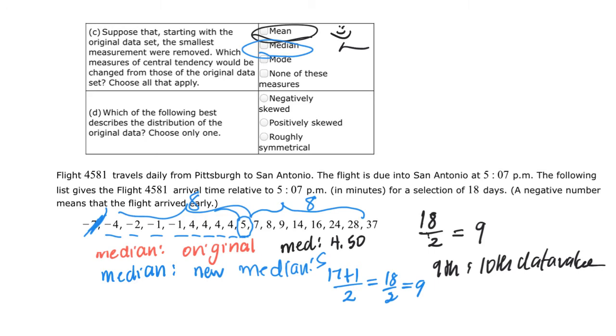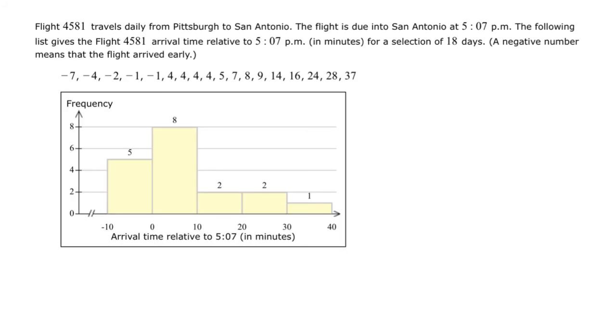D says, which of the following best describes the distribution of the original data set? Negatively skewed, positively skewed, or roughly symmetric? So let's go back and look at the original data set. So I'm going to add another page and put that original picture back there. So now we have our data in place. And I'm going to use my pen tool to kind of draw a distribution shape that would hit kind of the middle of each of those bars of our histogram.